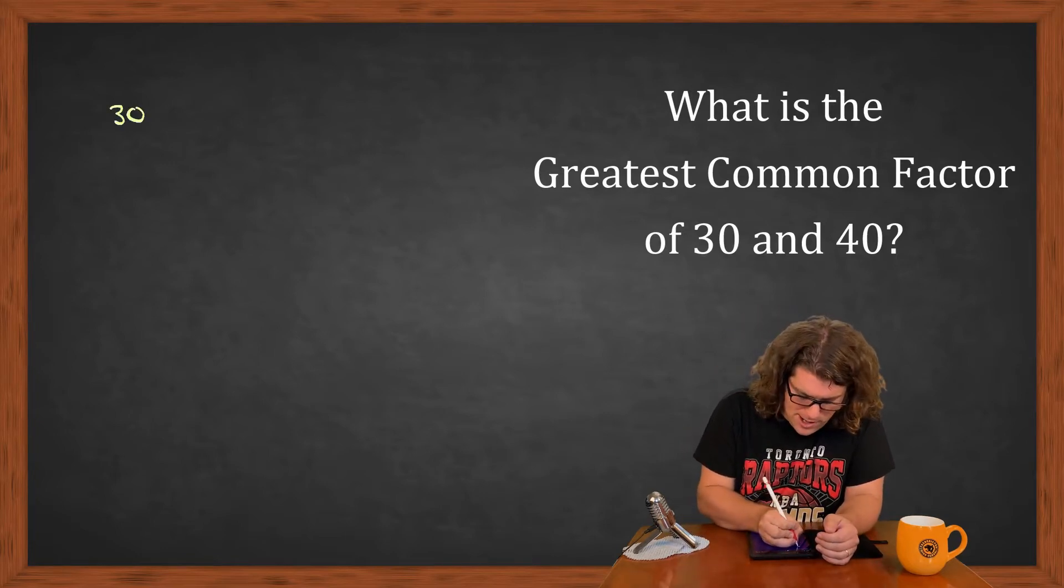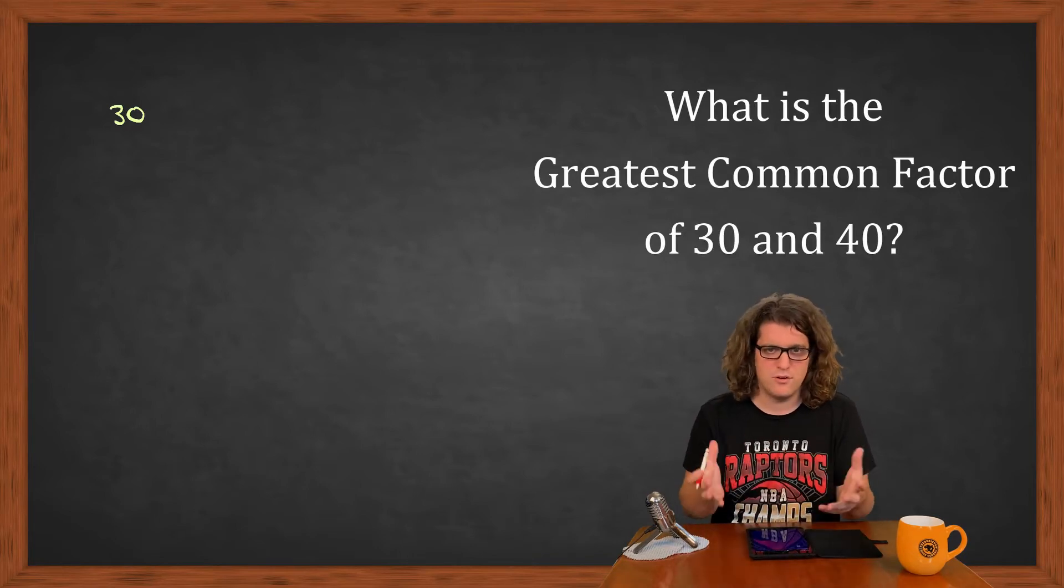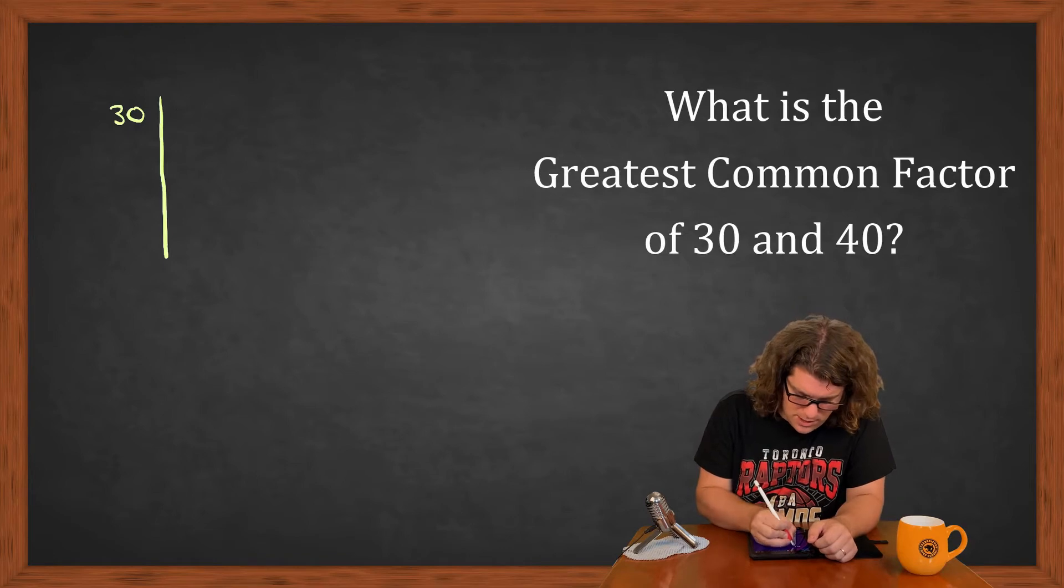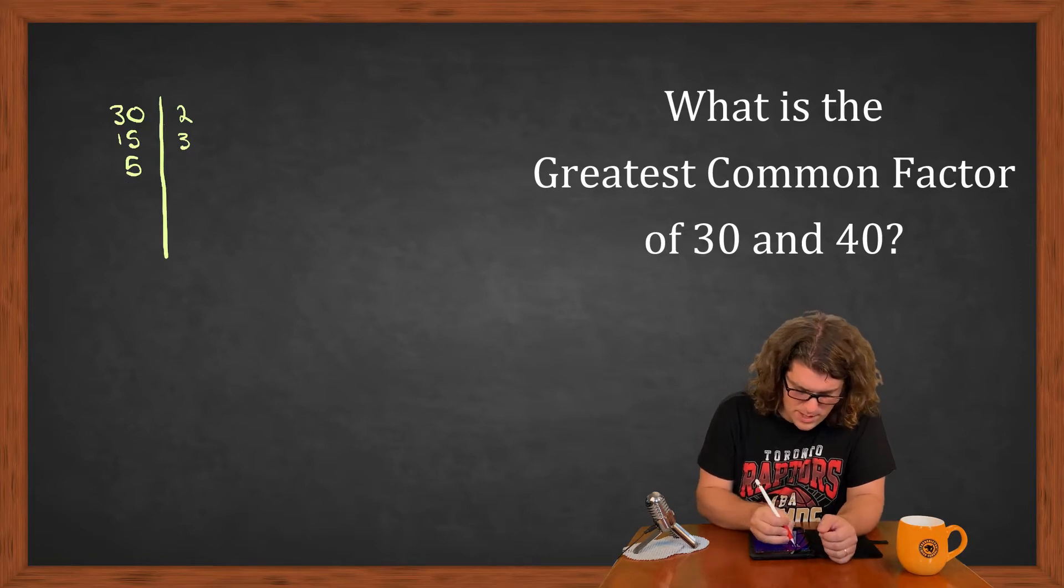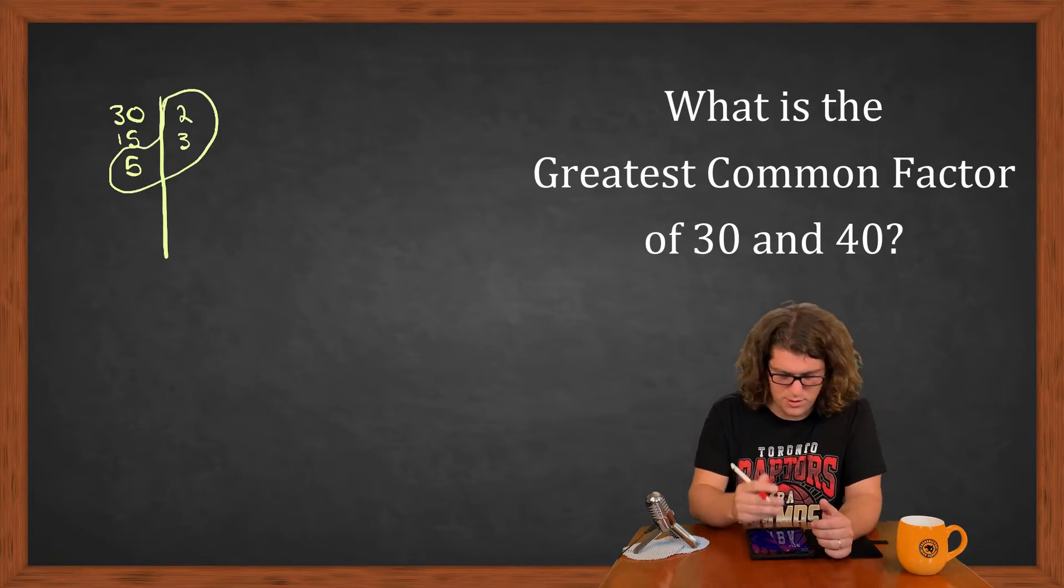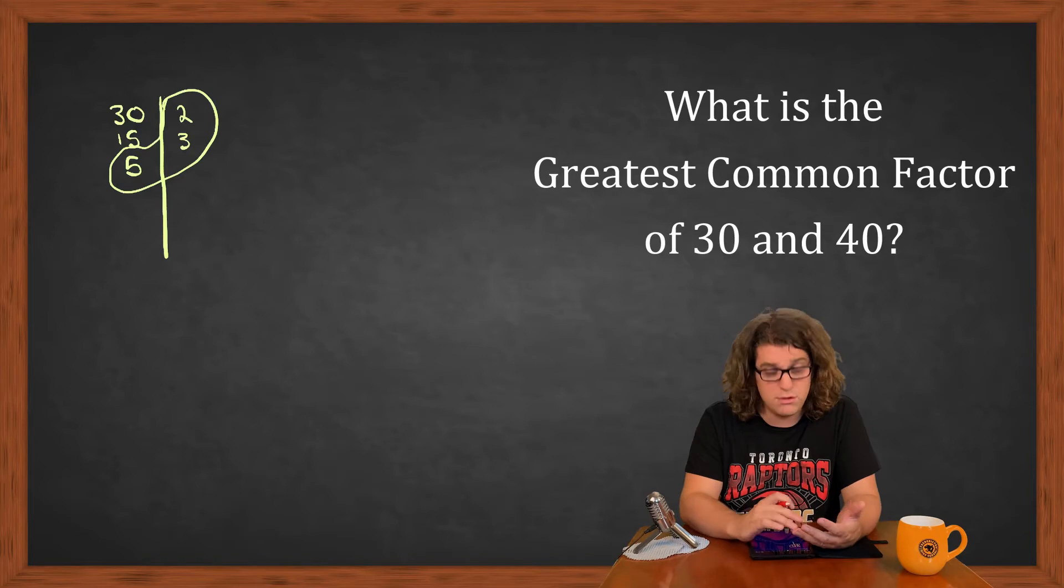So 30, I'm going to do it the way that I normally set it up from a graphical point of view. If you like to do the tree instead that's totally fine. So I know 2 goes into 30 leaves me with 15. 3 goes into 15 leaves me with 5. 5 is prime, so my prime factorization of 30 is 2, 3, 5.